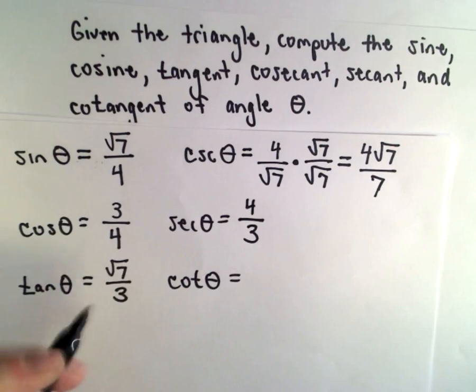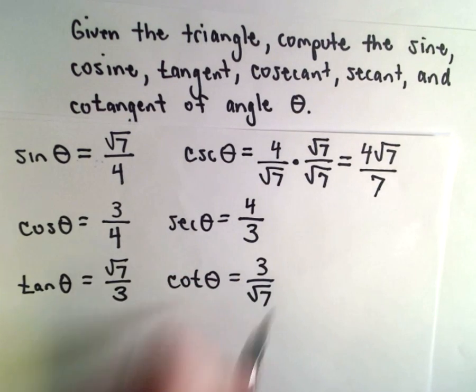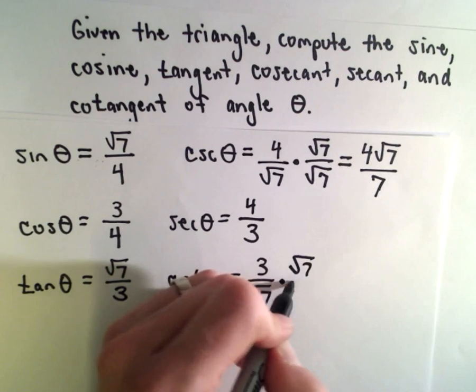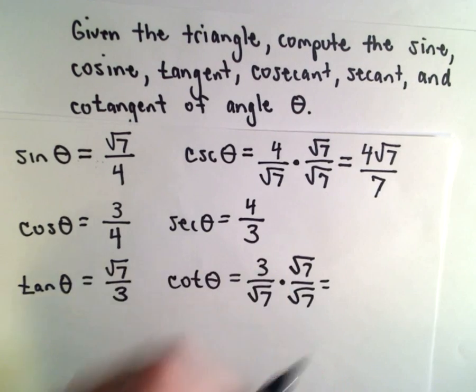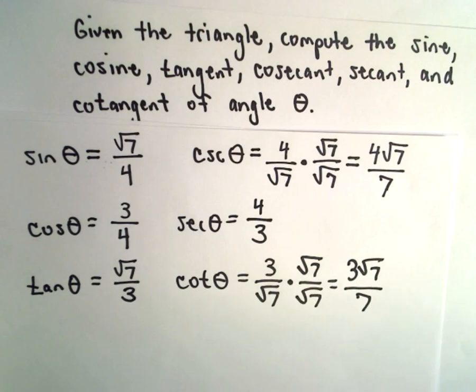And also cotangent, that'll be 3 divided by the square root of 7. And you can multiply top and bottom by the square root of 7. That'll give us 3 root 7 over 7. And now we've got all our solutions.